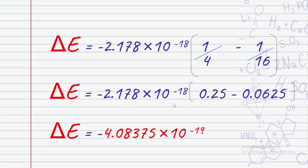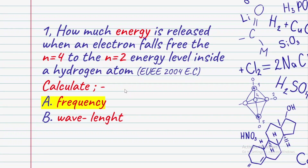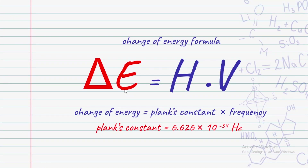Let's review what we have done. Using the Rydberg constant times 1 over n final squared minus 1 over n initial squared, the change of energy result is confirmed. Now, from this change of energy we can find the frequency, using change of energy equals Planck's constant times frequency.